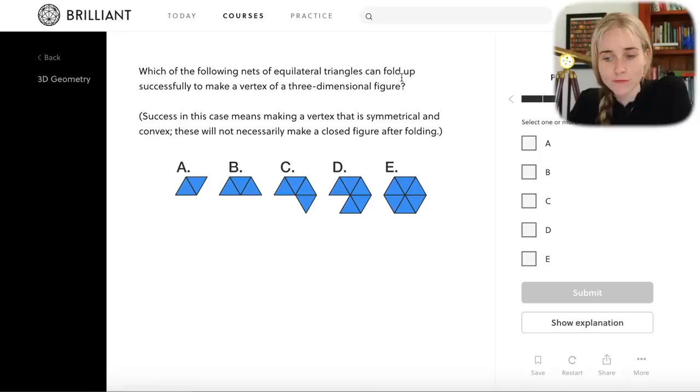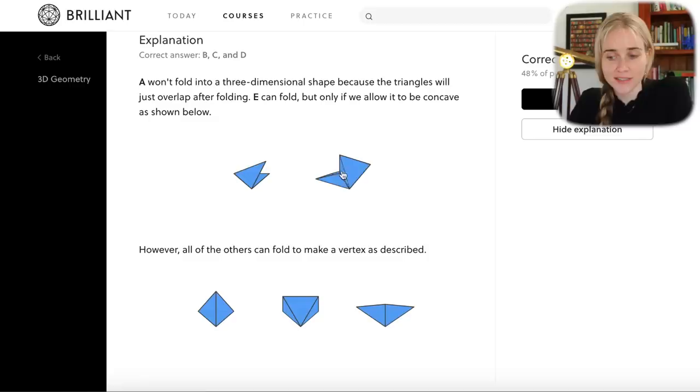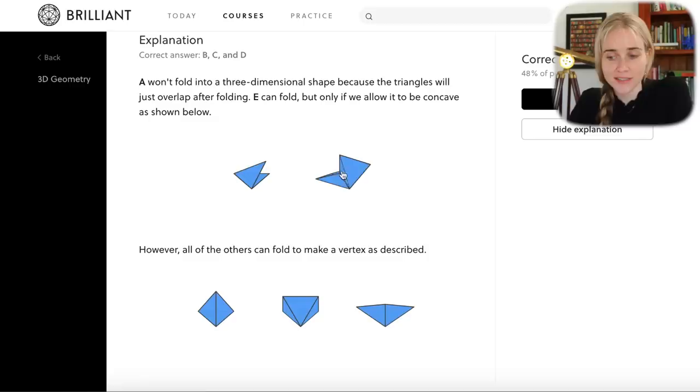The next question is which of the following nets of equilateral triangles can fold up successfully to make a vertex of a three dimensional figure? A won't work because it would just fold over on itself. And E doesn't really work either unless you want your shape to have a concave part. However, all the others can fold to make a vertex.